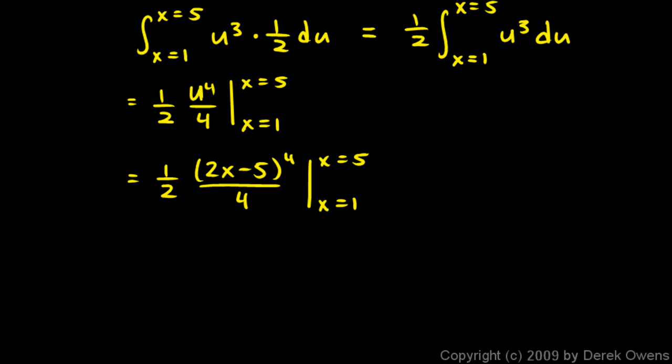And then we can just plug in the numbers and evaluate. So let's do that. This is going to be 1 half times, 2x minus 5. If x is 5, then that's going to be 10 minus 5 to the fourth over 4 minus, and now we put the 1 in there. If x is 1 right here, then I have 2 minus 5, which is negative 3 to the fourth over 4. And I've just factored out the 1 half basically out front.